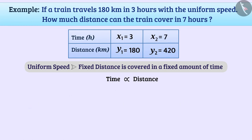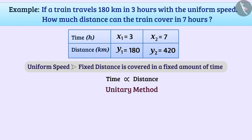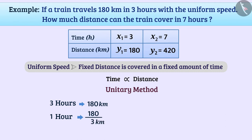Can we solve it with the unitary method too? We can solve it with the unitary method. The train covers a distance of 180 kilometers in 3 hours. In this way, in 1 hour, it covers 180/3 kilometers, that is 60 kilometers. Therefore, in 7 hours, the train will cover a distance of 7 × 60 kilometers = 420 kilometers.